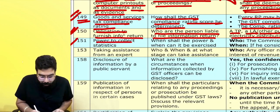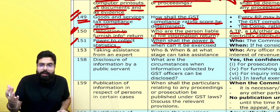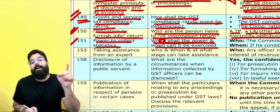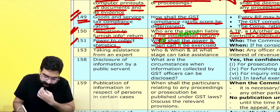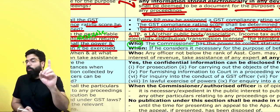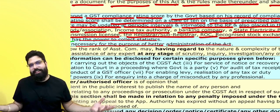Section 151 deals with the power to collect statistics. Exam question: When shall the power to collect statistics be exercised and who shall exercise it? The commissioner has the power to collect statistics. He shall exercise this power when he considers it necessary for the purpose of better administration of the act — whenever he considers it necessary, he can ask people to furnish statistics.